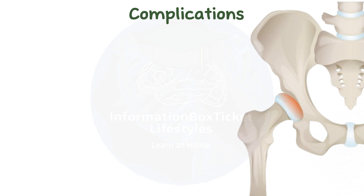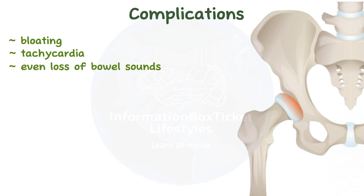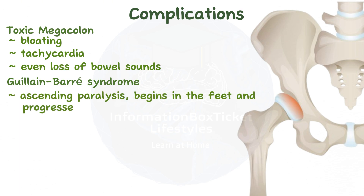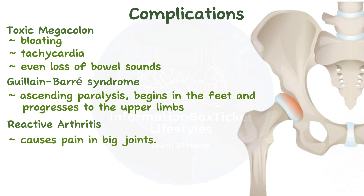Complications may cause other symptoms to arise. On physical examination, bloating, tachycardia, and even loss of bowel sounds are signs of toxic megacolon. A characteristic of Guillain-Barré syndrome is ascending paralysis, which begins in the feet and progresses to the upper limbs. In fact, one of the most frequent bacterial causes of Guillain-Barré syndrome is an infection with Campylobacter jejuni. Reactive arthritis causes pain in big joints.